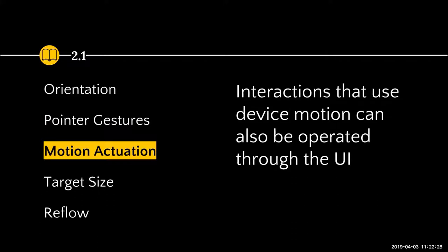For motion actuation, we're talking about interactions that use device motion — we need to make sure those can also be done via the UI. A great example: when Facebook came out with 3D videos, I was on a plane waving my phone around trying to get the 360 experience, which was incredibly frustrating. Eventually there was a way to swipe back and forth. Panoramas are a perfect example — just allow users to swipe or use arrows left and right. They don't have to wave their phone around because not everybody has that ability.